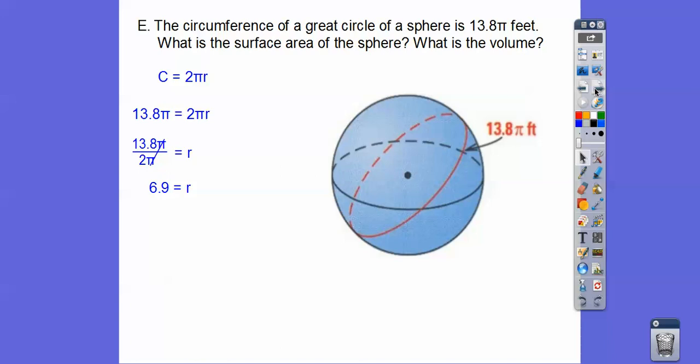So what's the surface area? Remember, surface area is 4πr². So when we square that, we get 190.44π ft², and if you want to change that to just a decimal, that's okay. I did not do that here.